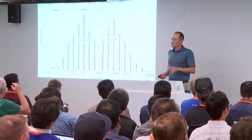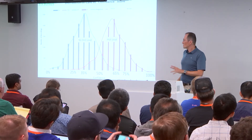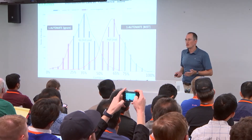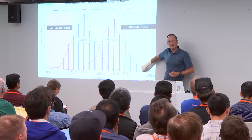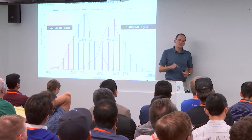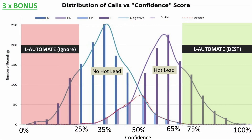But there's a lot more value than just 80% accuracy. Look at the extremes: at 70% confidence the person will buy, the accuracy is 100% — we predicted every single client that ended up buying. Same on the other end: at 25% confidence or less, our accuracy is 100%. That's where you make massive ROI improvements. You can say: calls with 25% or lower confidence — nobody will buy. Don't follow up with them. Maybe send them to your competitors.